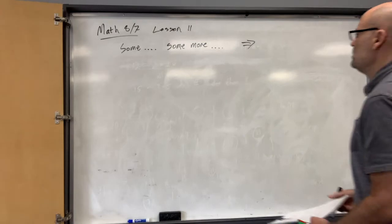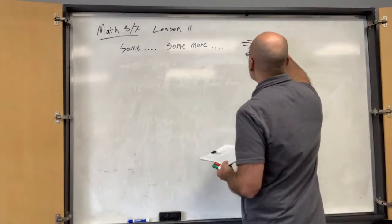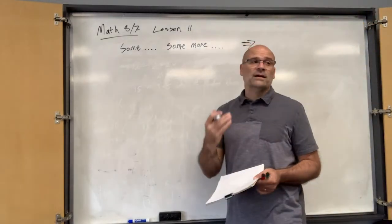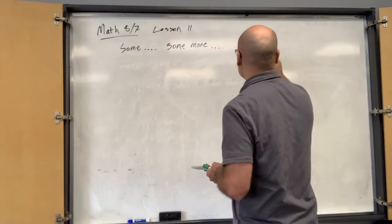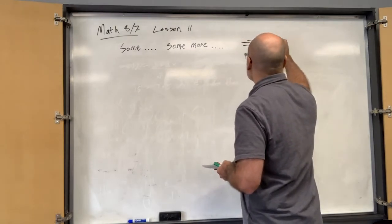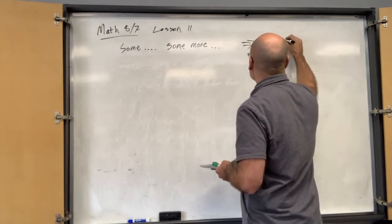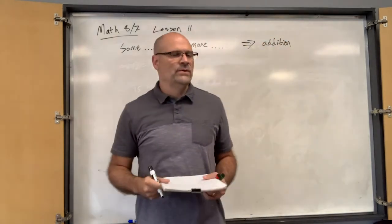So when you see the word some or some more, or when you see a number like I have five apples and then I get seven more apples, that's usually addition, but it's just an addition problem. That doesn't mean you're going to add, okay?